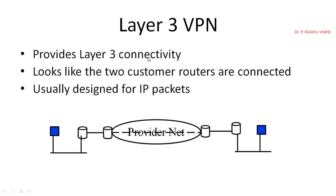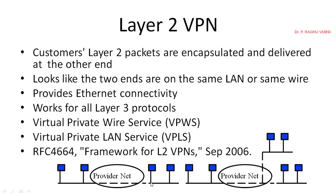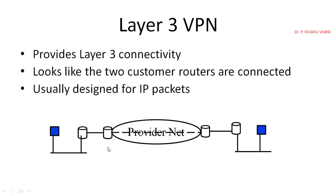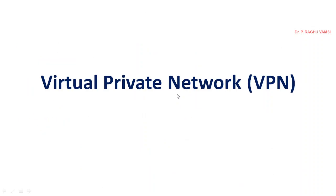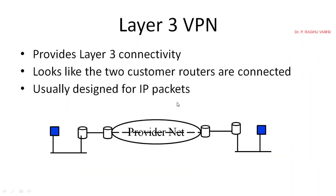Layer 3 VPN provides Layer 3 connectivity so it looks like the two customers' routers are connected to each other — a virtual feeling. Since it operates at the network layer, you are communicating with IP packets. To have a secure tunnel, we use IPsec. A system uses IPsec and sends data. We will see what IPsec is and how it is implemented in the next topics. Layer 3 VPN is usually designed for IP packets.